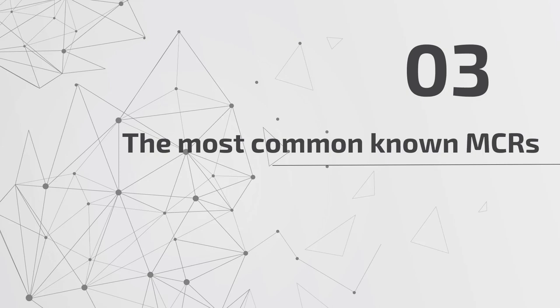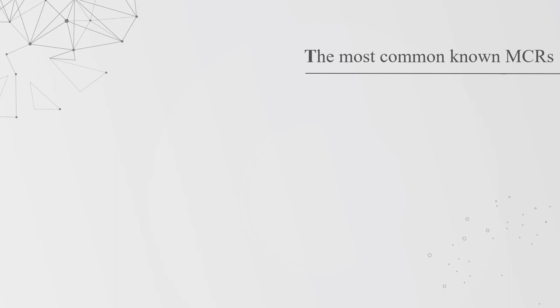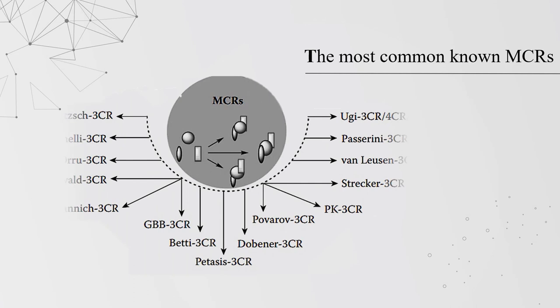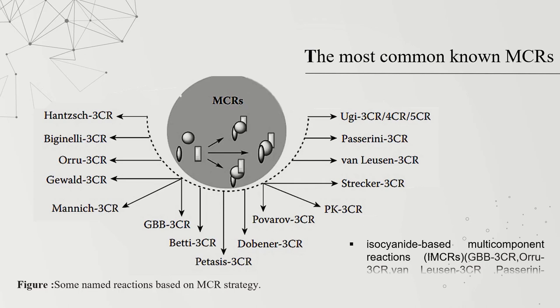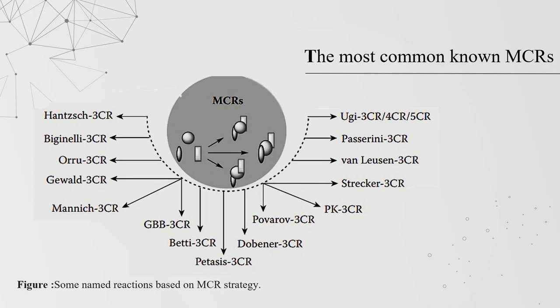The third part contains the most well-known examples of multi-component reactions. Since the development of the Strecker reaction in 1850, a great number of interesting MCRs have been reported. These reactions are named based on multi-component strategy by their discoverers. MCRs can be subcategorized into two general classes: isocyanide-based multi-component reactions (IMCRs), such as GBB three-component, Orru three-component, Van Leusen three-component, Passerini, and Ugi reactions; and non-isocyanide-based multi-component reactions (NIMCRs).